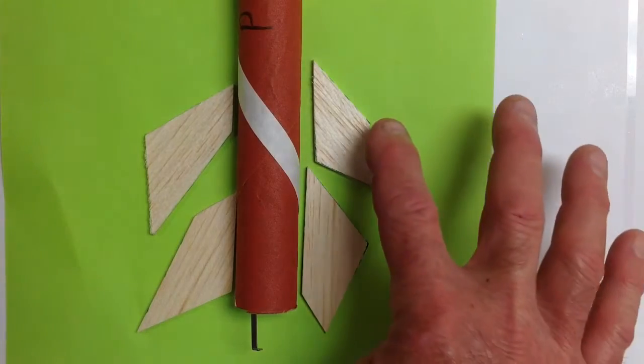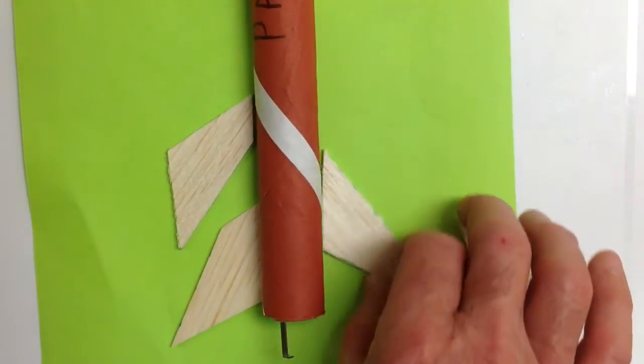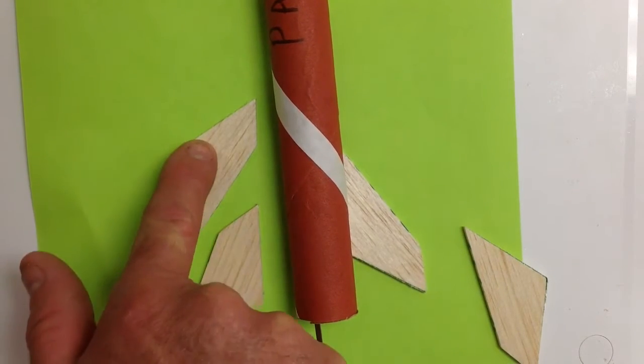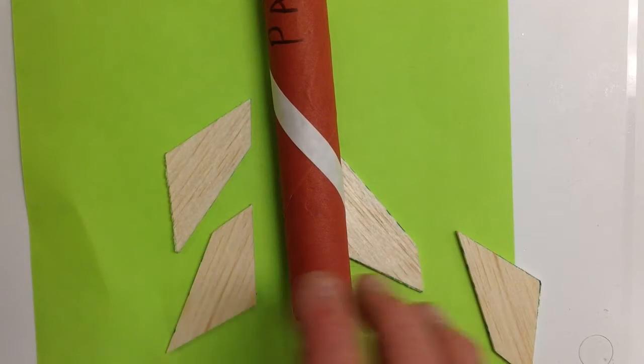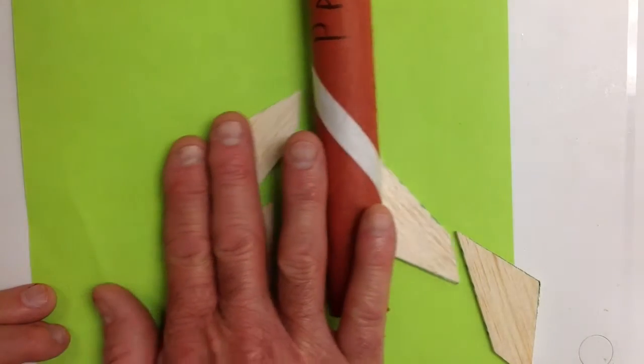So you can glue it on this way, this way, and obviously that would be glued down here. Here's another way here, and here's another way here. So you're going to choose which way you want to put the fin on your rocket.